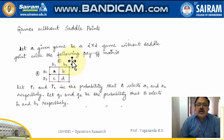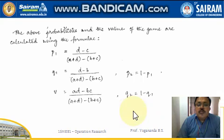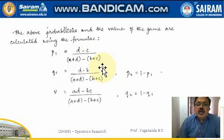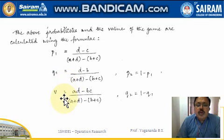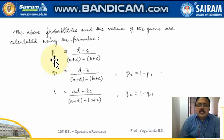1 minus q is the probability that player B goes for his second strategy — column 2. The payoff matrix is given in the form a, b in the first row and c, d in the second row. We have formulas to find the probabilities p and q, and v — the value of the game.